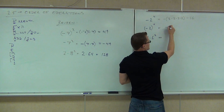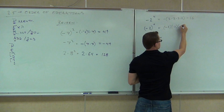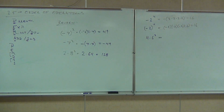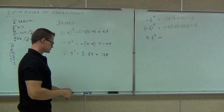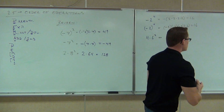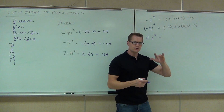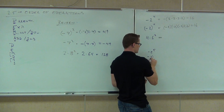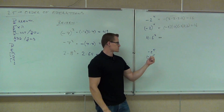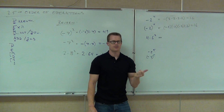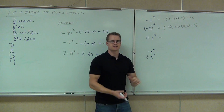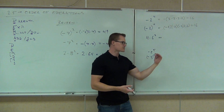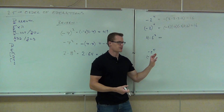When the negative is inside parentheses — (-2)⁴ — we have negative 2 times itself 4 times, giving positive 16. For an odd exponent like the 5th power: -2 to the 5th and (-2) to the 5th both give negative 32, because with an odd number of negatives you still get a negative result. They mean different things mathematically, but with odd exponents the answer is the same.